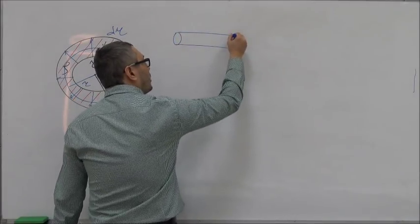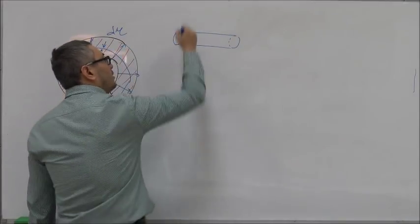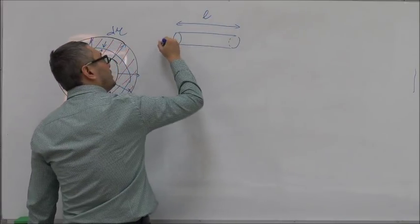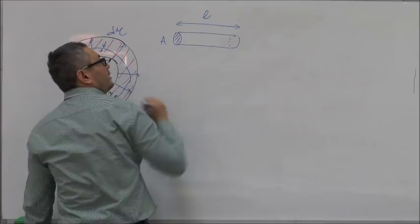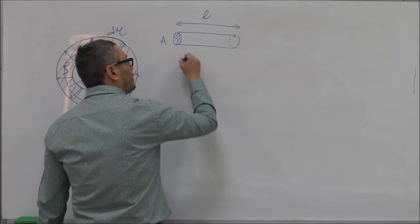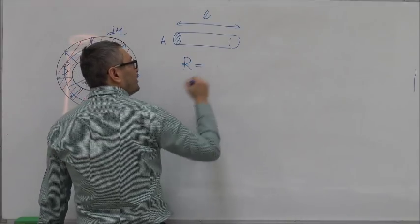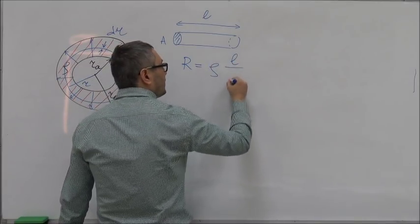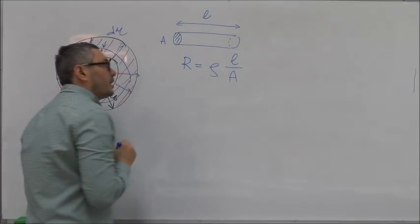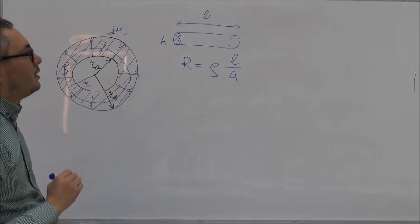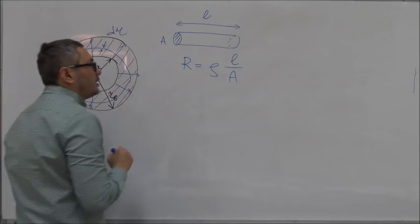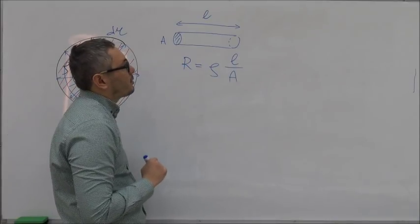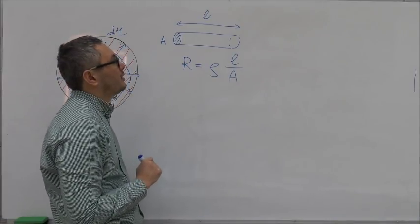Now we know that if we have a piece of wire of length L and cross-sectional area A, then the resistance of that wire is equal to the resistivity times length divided by A. If your resistivity is not uniform across the wire but the shape is the same, you can still find the total resistance.